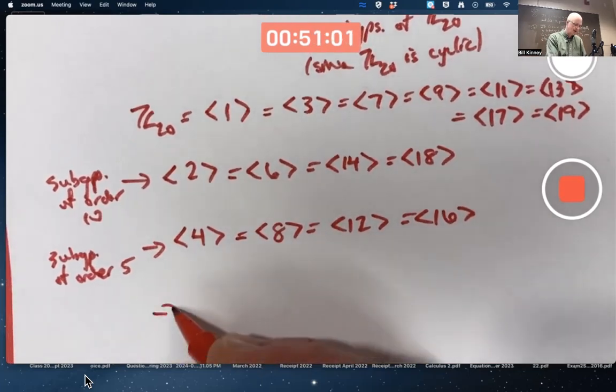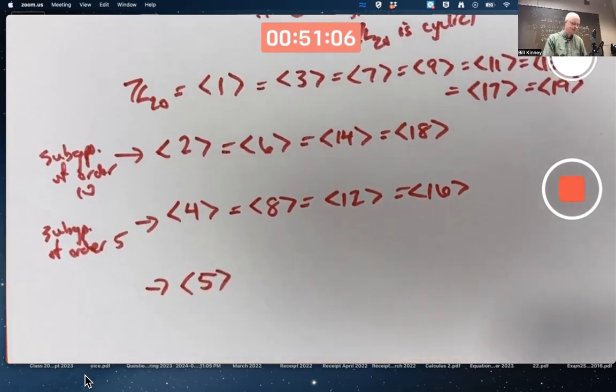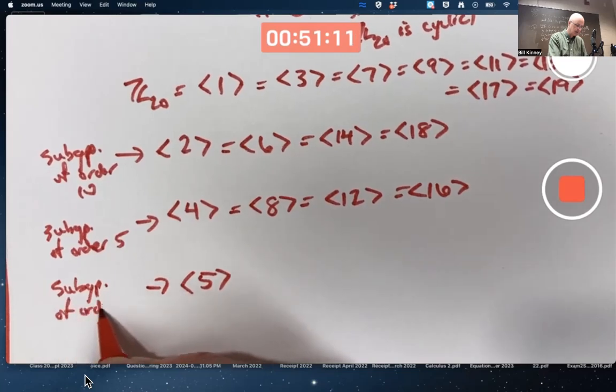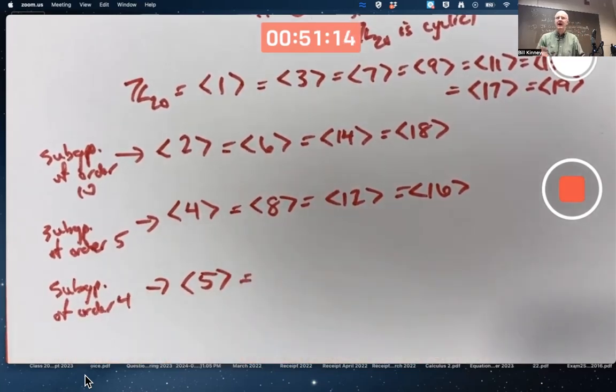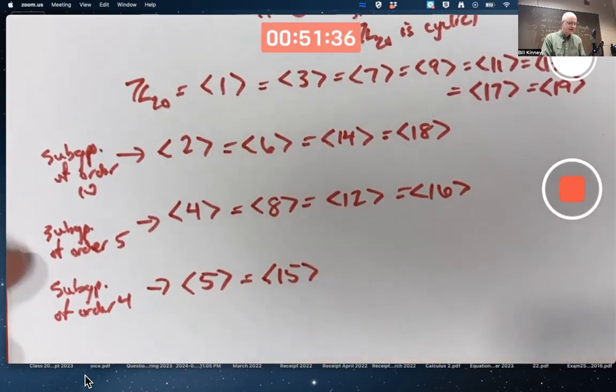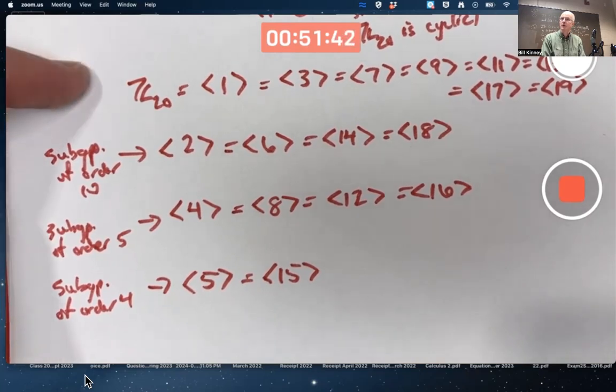The subgroup of order 4, I hope it's pretty clear, would be this, generated by 5. This would be the subgroup of order 4. Its elements are going to be 5, 10, 15, and 0. A group of order 4. What are the positive integers less than 4 that are relatively prime to 4? 1 and 3. 1 times 5 and 3 times 5 will be generators. The generators of this are 5 and 15. 4 does not divide 5 or 10, so it's not a subgroup of either of these. It is a subgroup of the whole group.